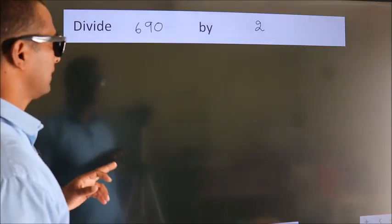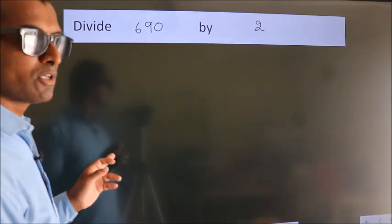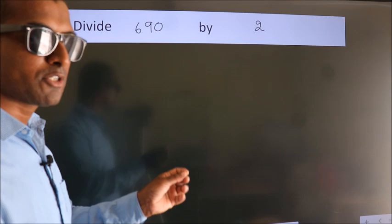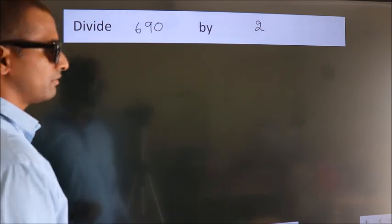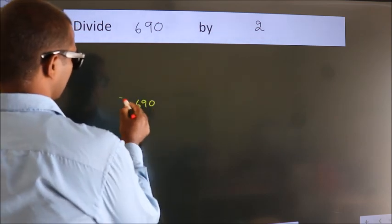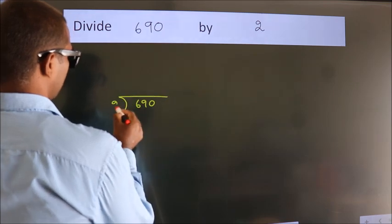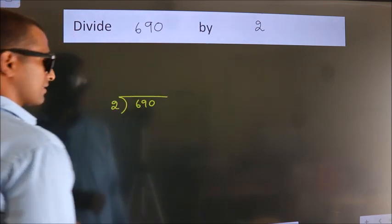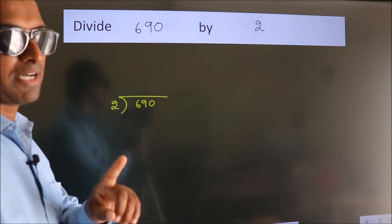Divide 690 by 2. To do this division we should frame it in this way. 690 here, 2 here. This is your step 1.